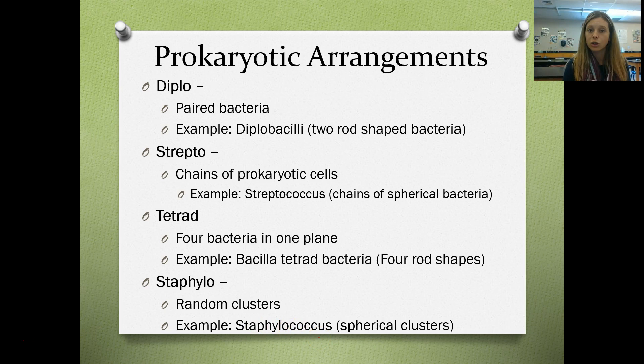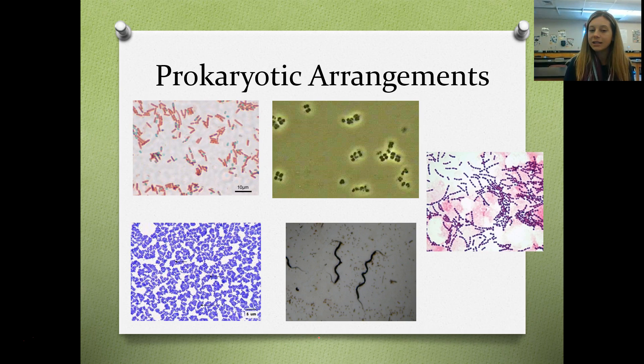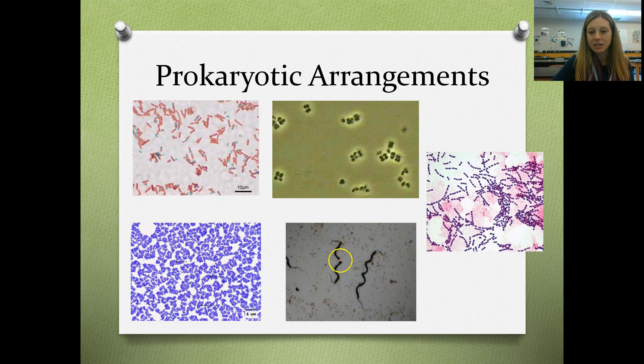For question 10, you have pairs of rods joined together — that would be diplobacilli. There's an arrangement of four spherical bacteria, which is a tetrad of cocci. This here is staphylococcus, clusters of circles. Here is a spirochete or spirilla bacteria, and here is streptococcus — the bacteria that causes strep throat, a chain of spherical bacteria. Pick one or two to draw and label.